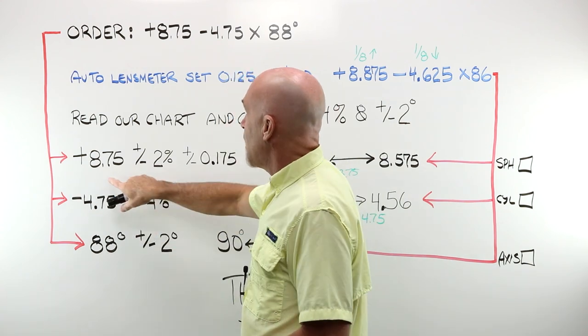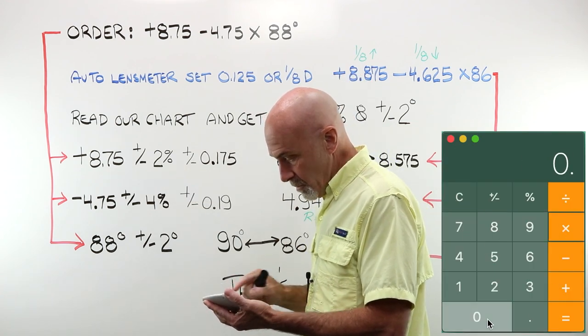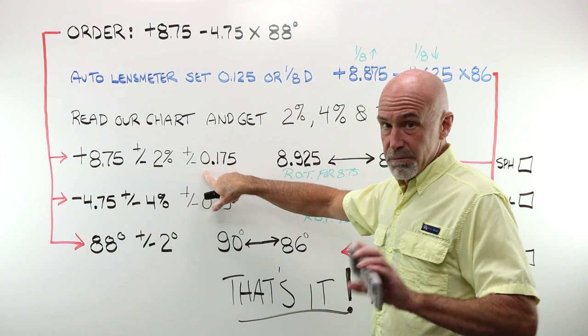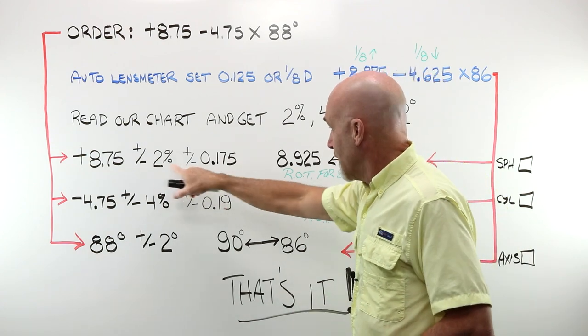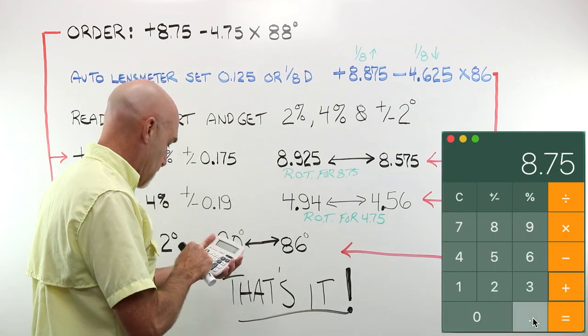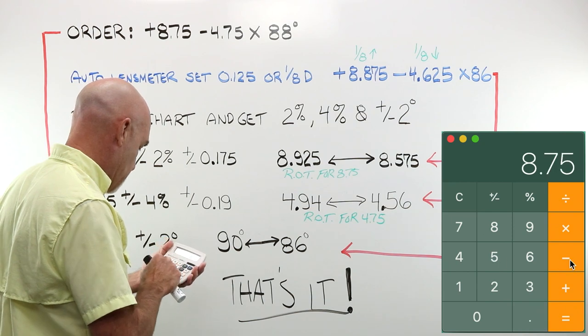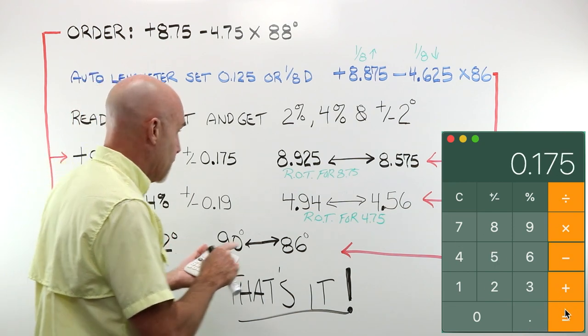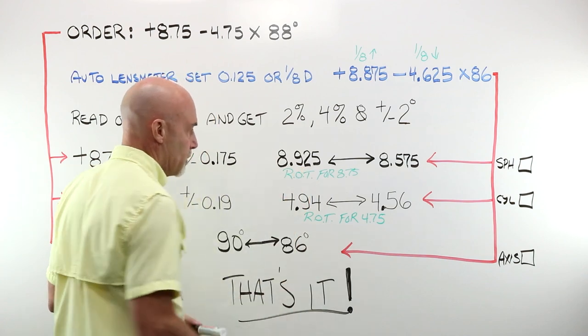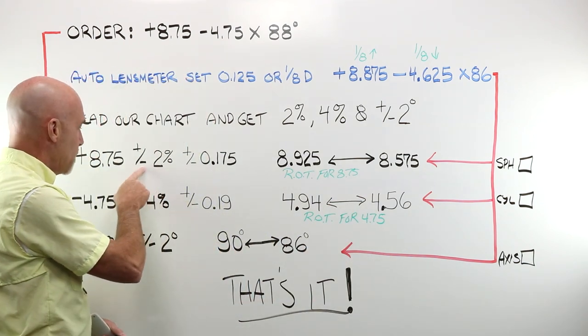What is my allowable tolerance for 8.75? It is plus or minus 2%. 8.75 times 0.02 gives me 0.175. You're with me, okay? So, I've already done that for you. There's my 0.175. 8.75 plus 0.175 is 8.925. 8.75 minus 0.175 is 8.575. This range, this number to this number is the range of tolerance for 8.75, when we have plus or minus 2%.